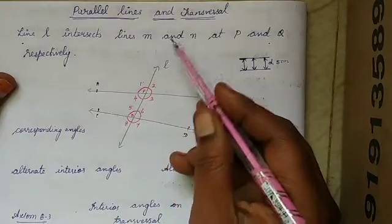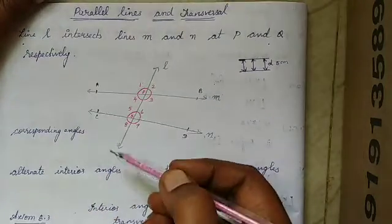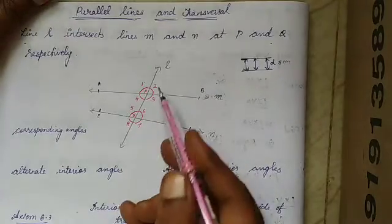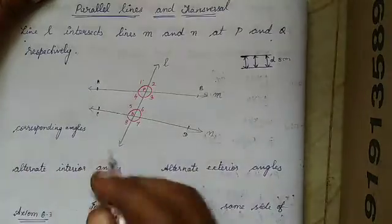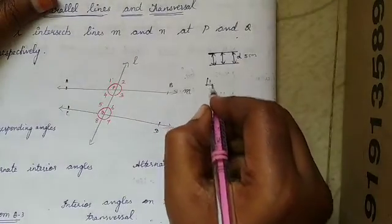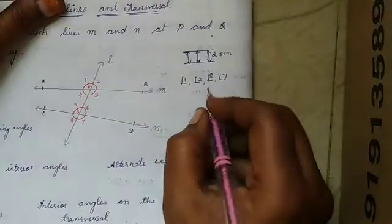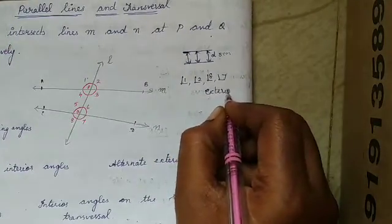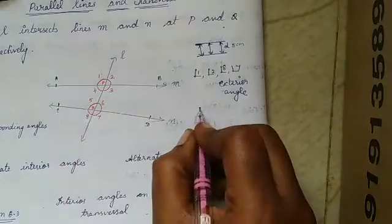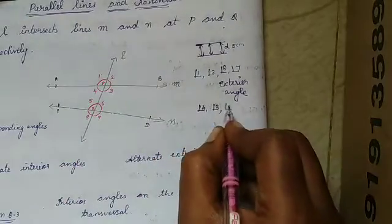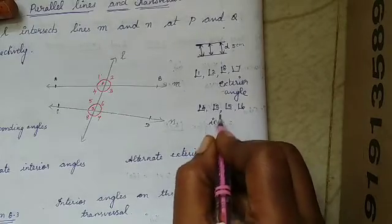L is a transversal line. The angles formed above line M are angle 1 and angle 2. Similarly, below line N, those are angle 8 and angle 7 — these are outside the two lines. So angles 1, 2, 8, and 7 are the four exterior angles. Between the two lines we have angle 4, angle 3, angle 5, and angle 6 — these are the interior angles.